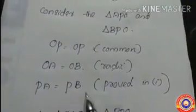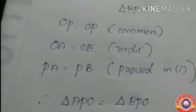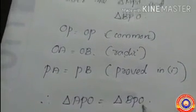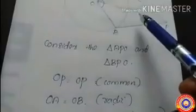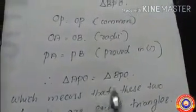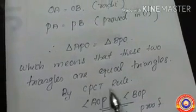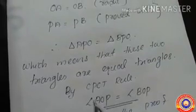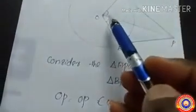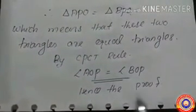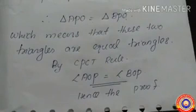OA equals OB as they are radii of the circle, and PA equals PB as already proved in sub-question one. Therefore triangle APO is congruent to triangle BPO — all three sides of both triangles are equal. By the CPCT rule (corresponding parts of congruent triangles), we can write angle AOP equals angle BOP. Hence the proof — this line bisects angle O.